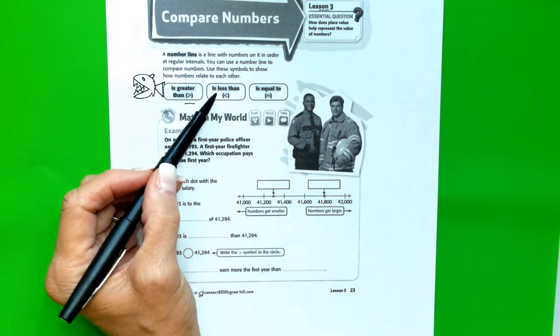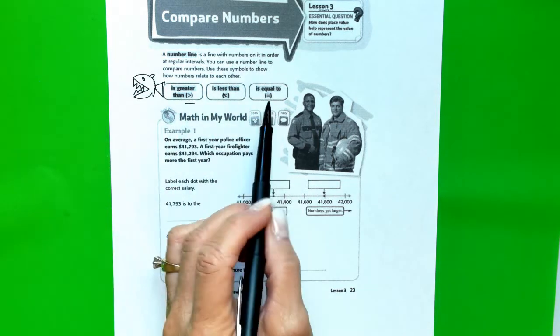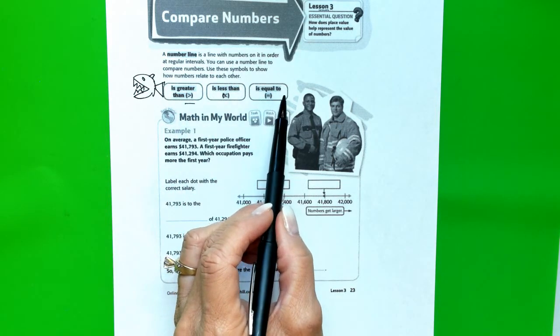The second symbol is the less than symbol. The tiny point always points to the smallest number. And then lastly, the equal symbol.